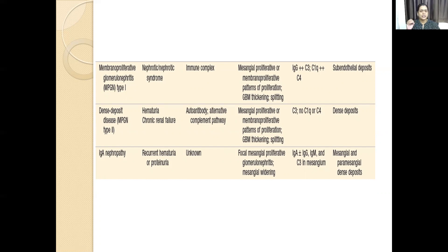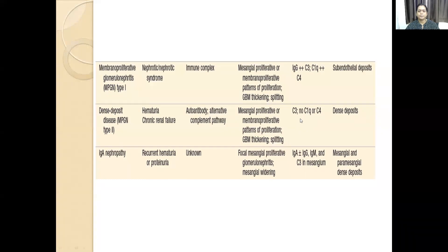While discussing immune-mediated mechanisms of glomerular injury, the pathogenesis can be associated with antibody, cell-mediated, or alternate complement pathway. The third type of immune-mediated injury is only seen in dense deposit disease, wherein there is a mesangioproliferative pattern of proliferation and there can be splitting. Here we see C3 but no C1Q or C4 in immunofluorescence in the form of dense deposit.